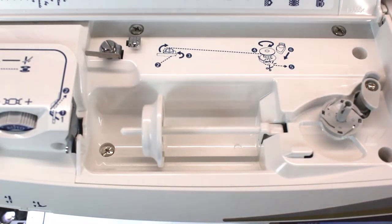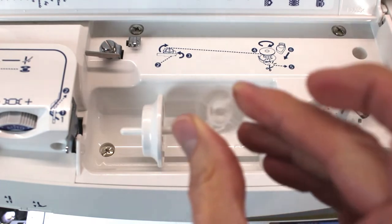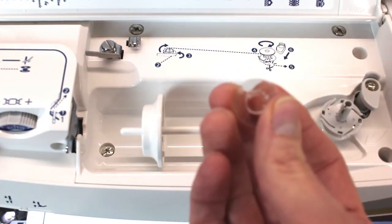Hi and welcome to Bobbin Winding 101 on your Juki DX7. First things are we're going to start with a regular Class 15 clear plastic bobbin.